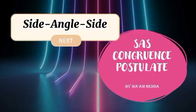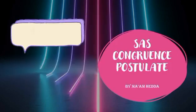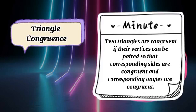That is side-angle-side congruence postulate. Remember the triangle congruence? Two triangles are congruent if their vertices can be paired so that corresponding sides are congruent and corresponding angles are congruent.